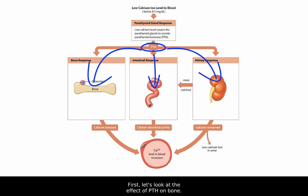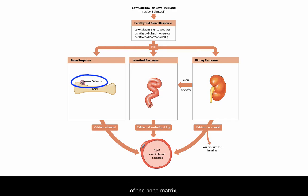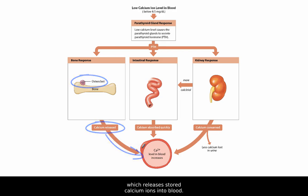First, let's look at the effect of PTH on bone. PTH stimulates the maturation of osteoclasts. Increased osteoclastic activity accelerates erosion of the bone matrix, which releases stored calcium ions into blood.